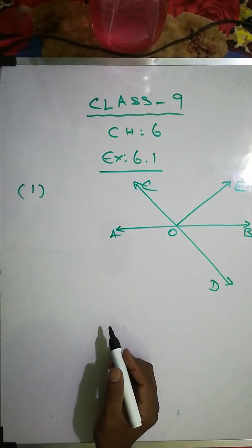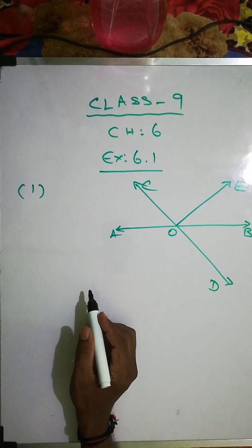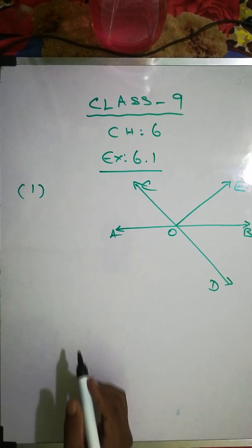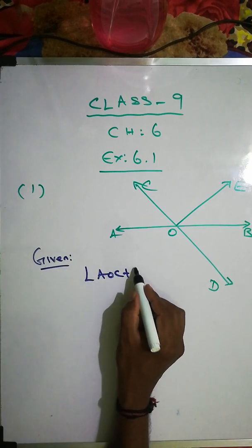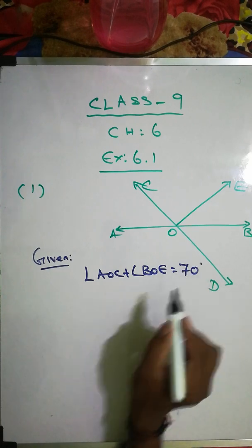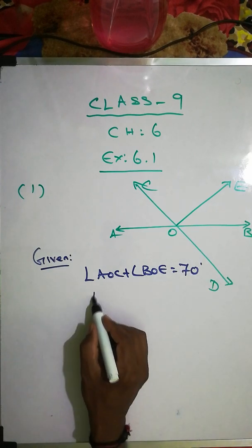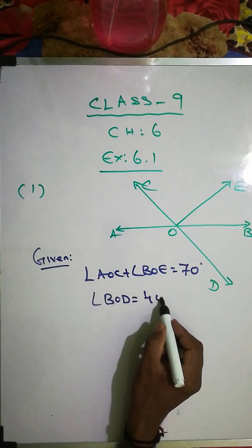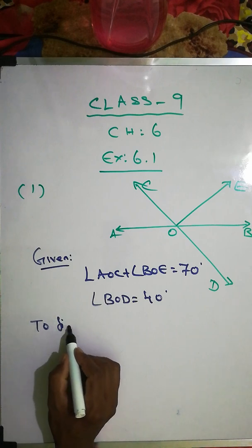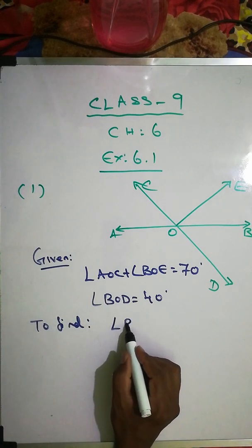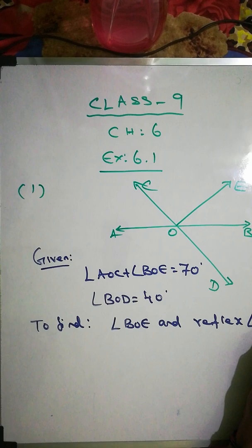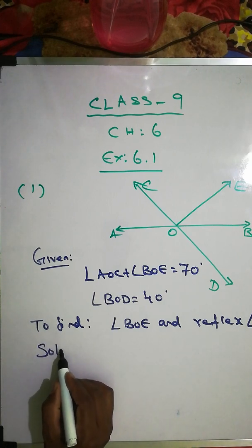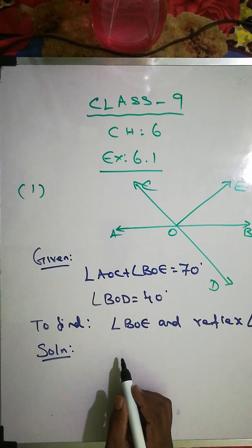Class 9, Exercise 6.1, Chapter 6, Question 1. In figure 6.15, lines AB and CD intersect at O. Angle AOC plus angle BOE is given as 70 degrees, and angle BOD is given as 40 degrees. We have to find angle BOE and the reflex of angle COE.